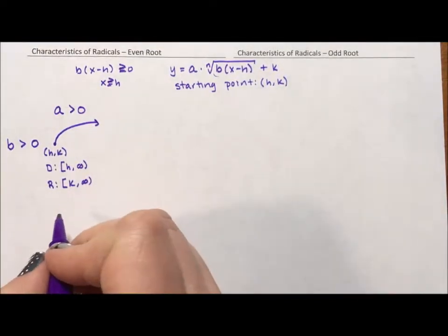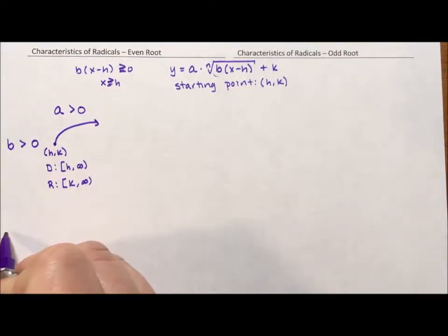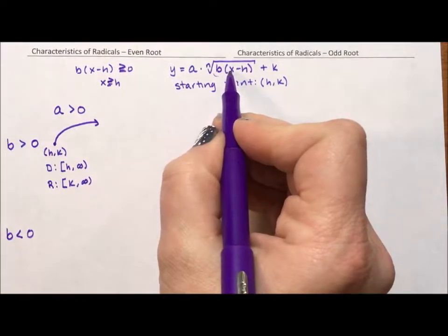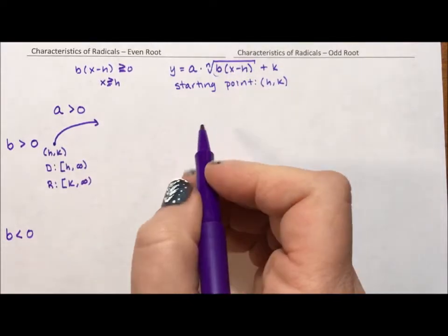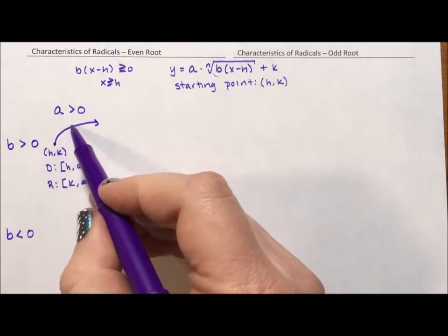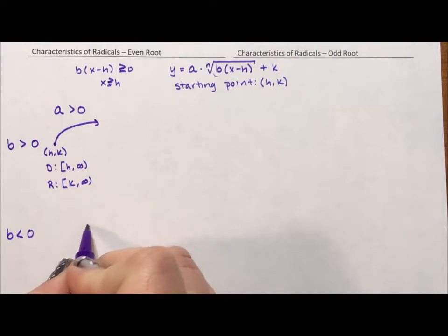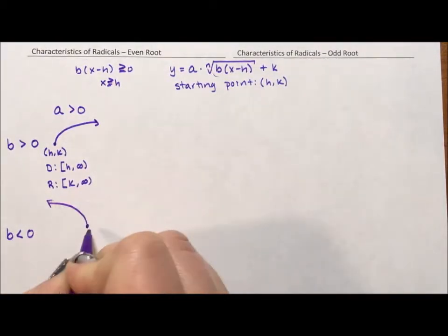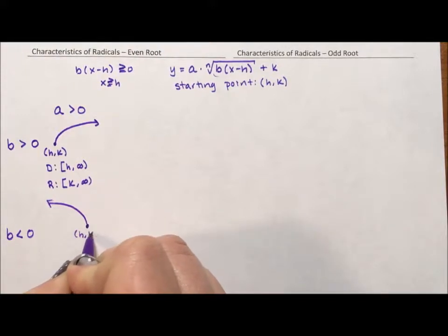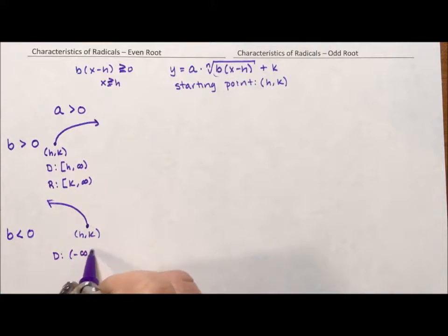Okay. Well, that's what happens if b is positive. If b is negative, that means we have a negative number multiplying to x. What happens there is the y is still going up. Our range is still going up, but our x direction is going backwards. So we still have the same starting point of (h,k). Now the domain, because we're going backwards, is negative infinity to h and the range is still going up. So it's still k to positive infinity.